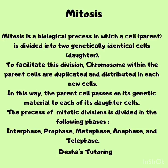What is mitosis? Mitosis is a biological process in which a cell called the parent is divided into two genetically identical cells called the daughter. To facilitate this division, chromosomes within the parent cells are duplicated and distributed in each new cell. In this way, the parent cell passes on its genetic material to each of its daughter cells. The process of mitotic division is divided into the following phases: interphase, prophase, metaphase, anaphase, and telophase.